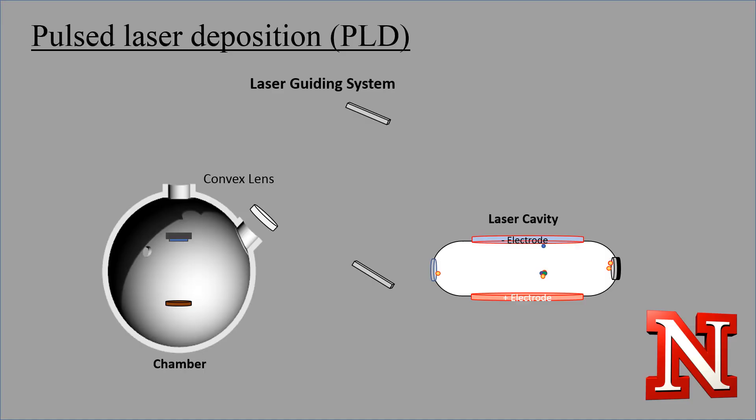Inside the laser cavity, there is a mirror on each side, one being 100% reflectivity (in this case the mirror on the right), and the other is a lower percent reflectivity (the mirror on the left).